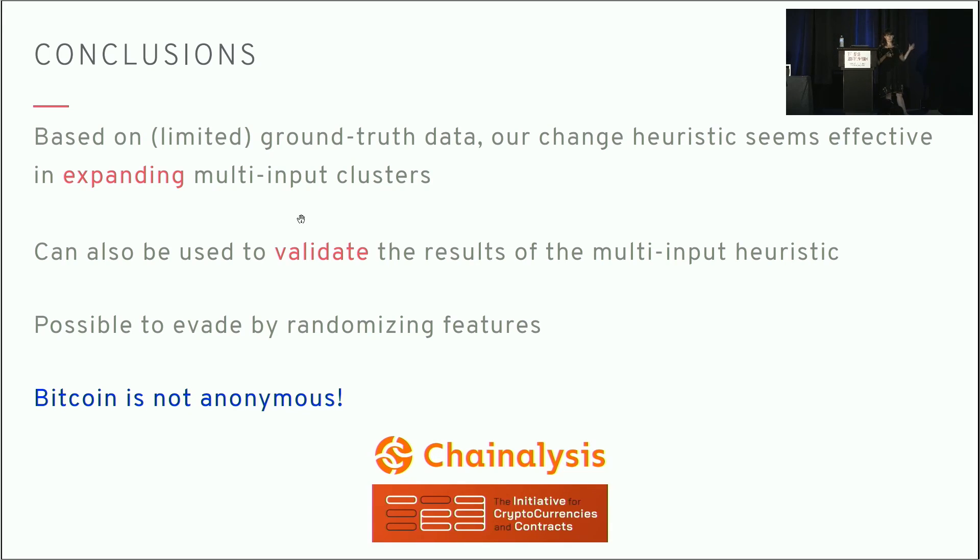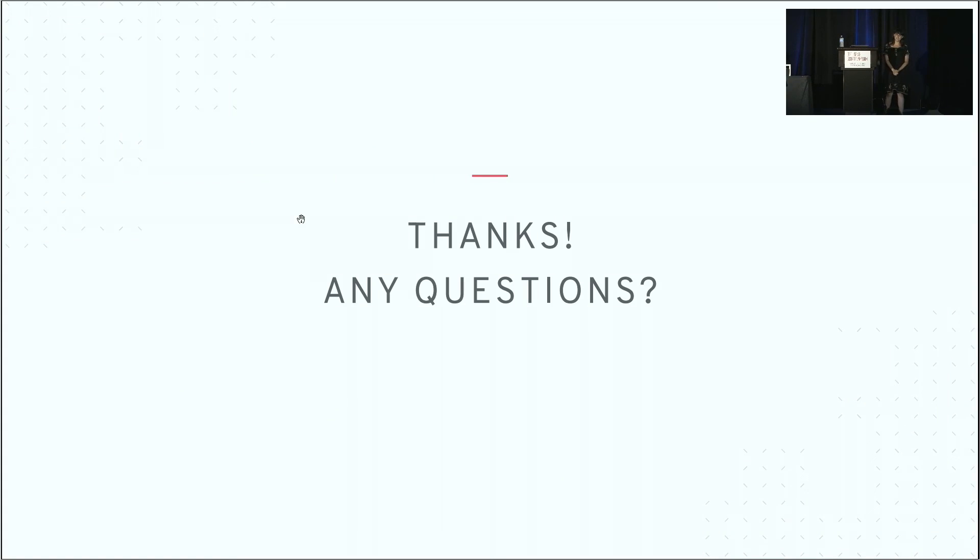Of course, I should mention, if this concerns you, it is possible to evade this heuristic by just randomizing the features of your transactions. That would make it essentially impossible to continue following these peel chains. If there's one takeaway from this talk, I hope it's that Bitcoin is not anonymous. Tell your friends. I'd like to say a really big thank you to Chainalysis for working with us on this and getting us this data. Thank you to IC3 for funding it. Thanks to you for listening, and I'm happy to take any questions.